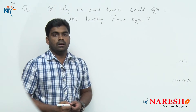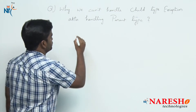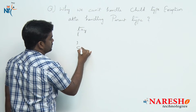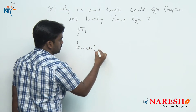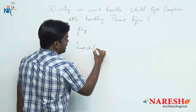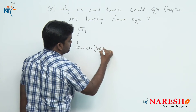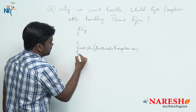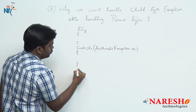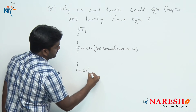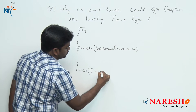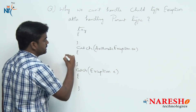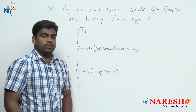Now let's see how it is not allowed. For example, if we write a try block where the first catch block handles ArithmeticException — which is a subtype — and the next catch block handles Exception — which is a supertype — writing it in this order is allowed.